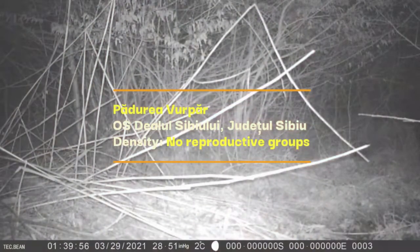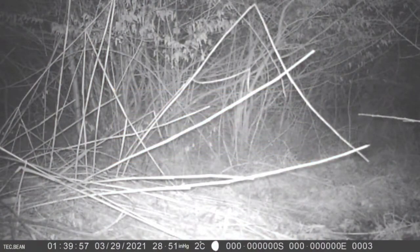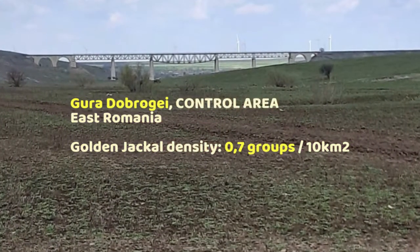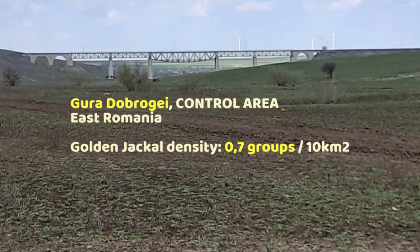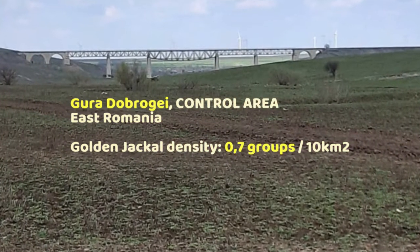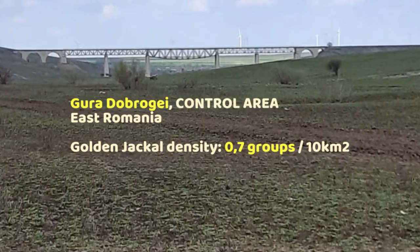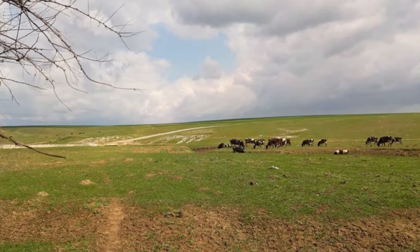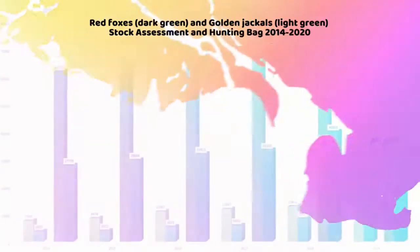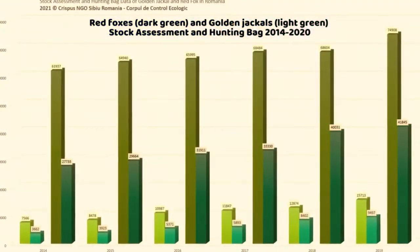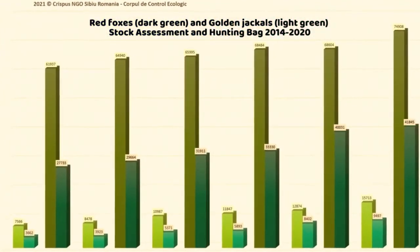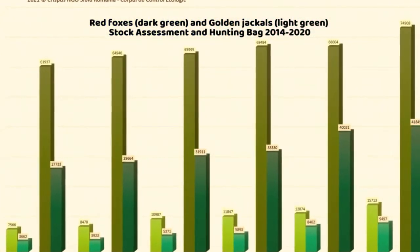In the following years, other calling stations were added in the Danube Delta area. Until 2012 there was a continuous increase in the density of the jackal in the Delta area, so that later in 2015, the density would start to decrease. The key density analysis area in the Danube Delta is represented by the Caraorman canal.